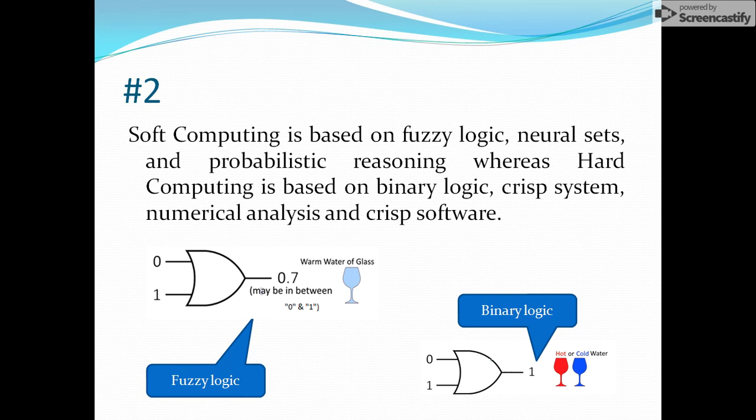So if we are taking 0 as cold water and 1 as hot water, then the mixing will give you something like warm water. That is what fuzzy logic is - giving some value that is not completely precise, not completely exact.